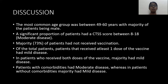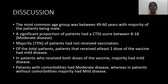Coming to the discussion, the most common age group was between 49 to 60 years, with majority of the patients being male. A significant proportion of patients had CTSS scores between 8 to 18, that is, moderate disease. Majority of patients had not received vaccination. Patients that received at least one dose of the vaccine had mild disease, and in patients who received more doses of the vaccine, majority had mild disease. Patients with comorbidities had moderate disease, whereas in patients without comorbidities, majority had mild disease.